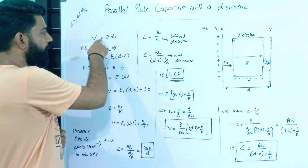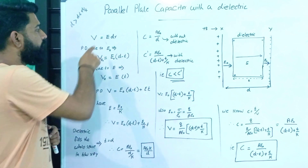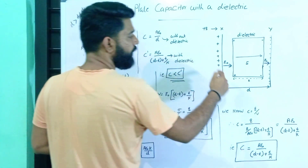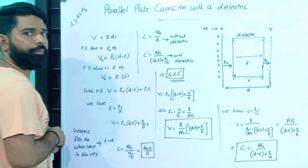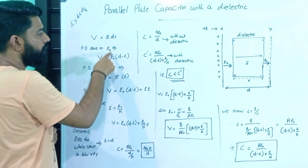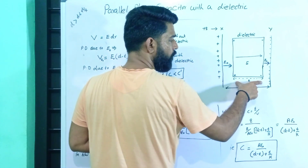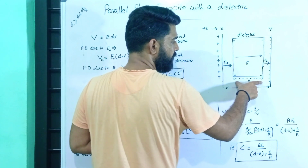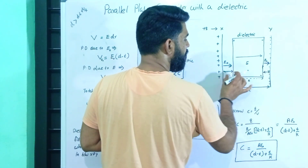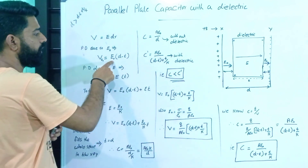We will see the potential difference in this case. V is equal to E times dr. We will create an electric field in this case. The total potential difference accounts for the field E₀ in the gap and field E inside the dielectric. E₀ acts over distance d minus t, and E acts over distance t.